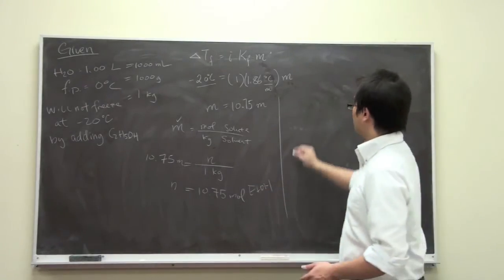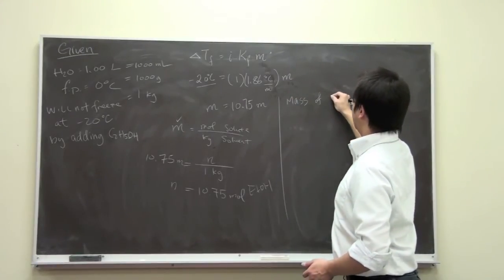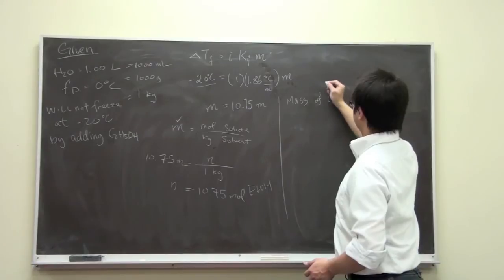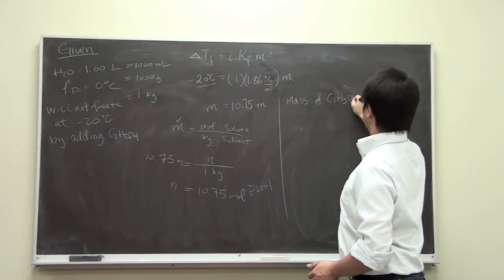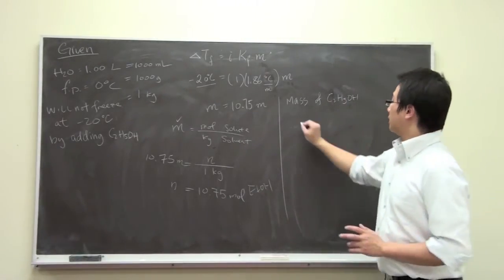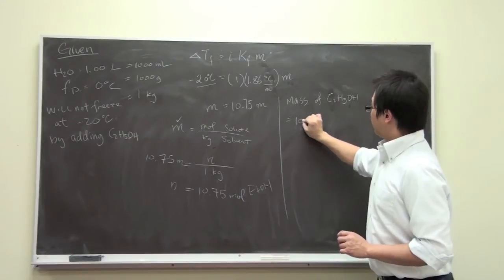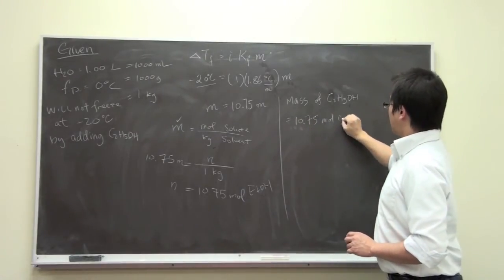And with this number of moles we can find out the mass of ethanol. I was using shorthand for the ethanol. So this is ethanol, this is ethanol. We have 10.75 moles of ethanol.